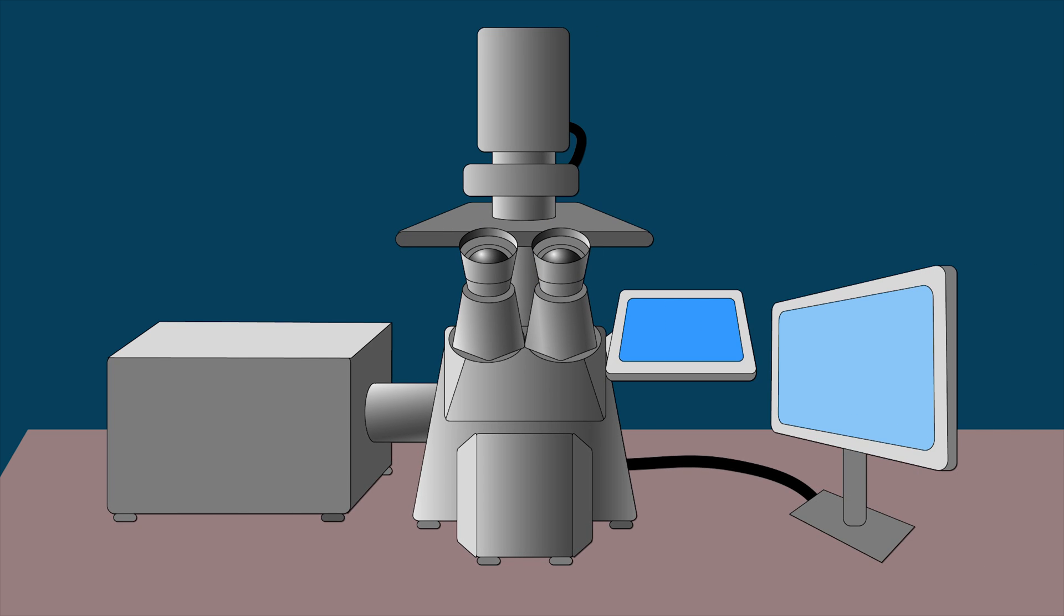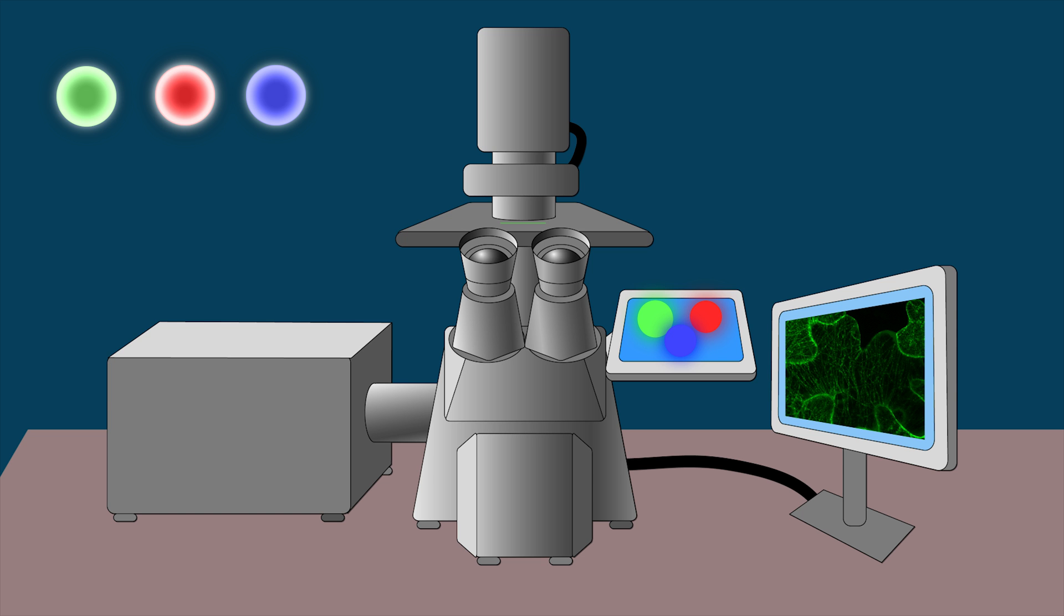We view the leaf section under a confocal microscope. The microscope must have different colored lasers so we can see the fluorescent sections.